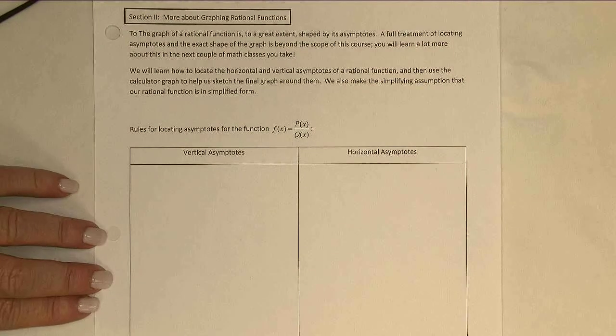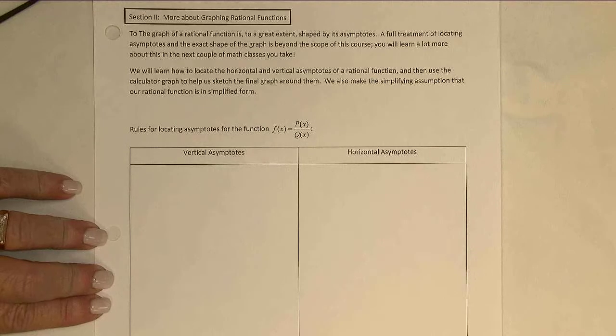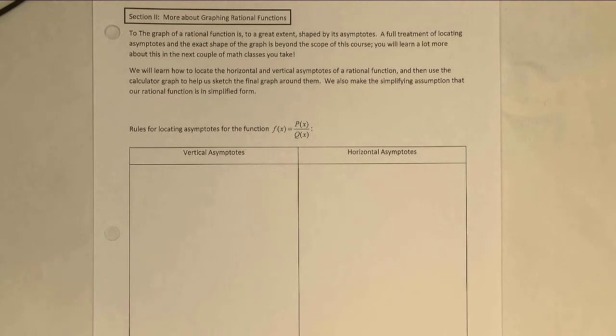This is Section 3.2, Part B. We're now going to look at graphing some rational functions that aren't necessarily in the form where we can see the shifts easily. Graphing rational functions in general is a fairly complex process. To do it without a calculator and do it well, we need a lot more sophisticated math than we really have available to us yet. If you take more math classes, which I hope you will, you'll learn more about this in the next couple of courses that you take. For now, however, we can say a couple of things.